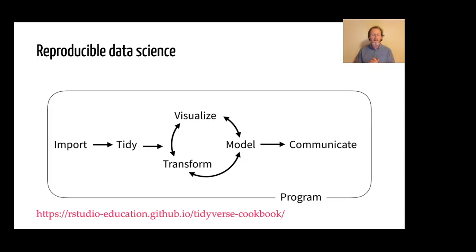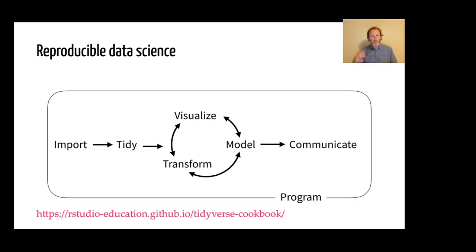Most of you have seen a variant of this slide before, taken from the Tidyverse cookbook. It outlines the ideal workflow for reproducible data science: starting with importing your data, tidying it into a format that works, visualizing it, modeling it, transforming it, doing some analysis to get meaning out of that data, and then communicating the results. The thing that ties this all together and makes it a reproducible workflow is that programming box around it. By writing all the steps of our analysis in code, it makes it a reproducible product that can be run by collaborators and reviewers.